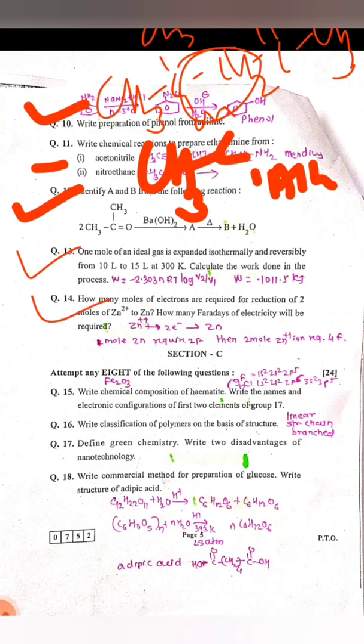Hematite formula: Fe2O3, or you can write Fe2O3·2H2O. The two elements of group 17: fluorine and chlorine. 1s² 2s² 2p⁶, 1s² 2s² 2p⁶ 3s² 3p⁵ is the electronic configuration of fluorine and chlorine elements. Classification of polymers on the basis of their structure: linear, straight chain, or branched. Linear means polyethylene straight chain and branched.